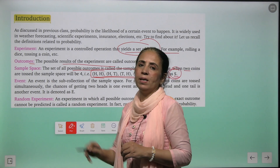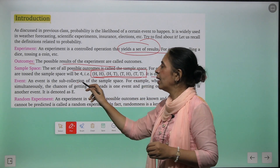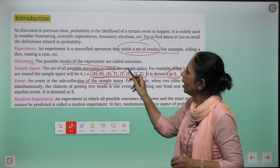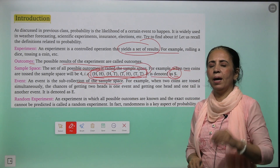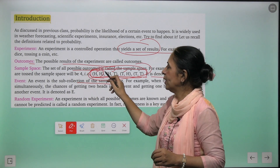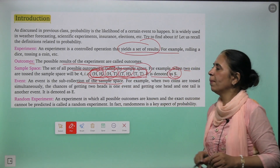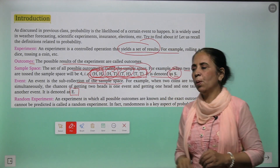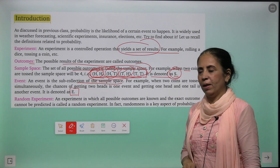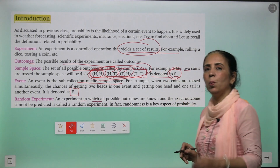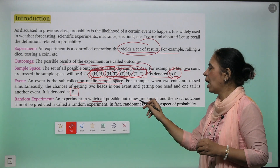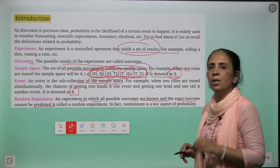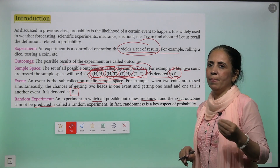An event is a sub-collection of sample space. Jo cheezein milkar sample space banati hain, unhe agar aap individually dekhte hain, we call them an event — and we represent event as E every time. A random experiment is one in which all possible outcomes are known, but the exact outcome cannot be predicted. Aise experiments ko hum bolte hain random experiment.